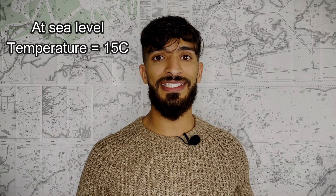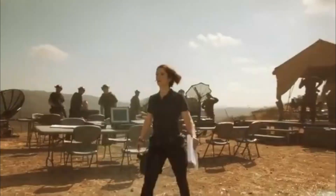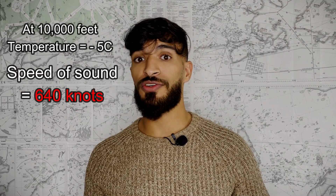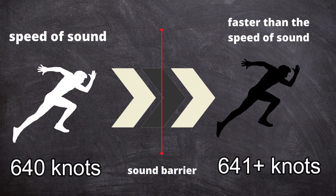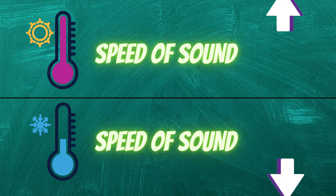So what would happen if you traveled faster than the speed of sound? You will break through something called the sound barrier. We're not going to be talking about the sound barrier in detail in this video, but I want you to understand how the speed of sound differs based on the temperature. At sea level, on a standard temperature day of 15 degrees Celsius, the speed of sound is 667 knots. If you traveled 668 knots or more, you will break through the sound barrier. At 10,000 feet, if the temperature is minus 5, the speed of sound will be more like 640 knots, so 641 knots or more will break through the sound barrier. Warm air means a higher speed of sound; cold air means a lower speed of sound.